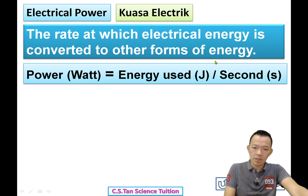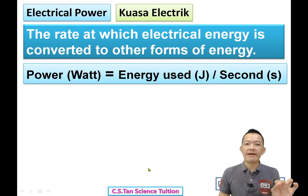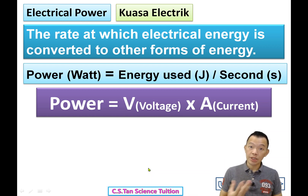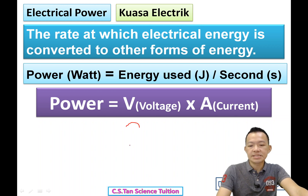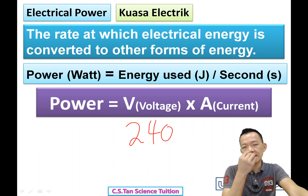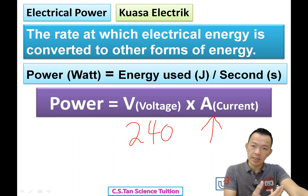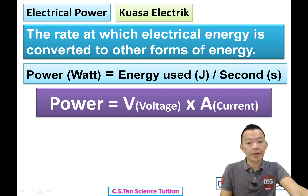Another formula — copy on the notes. Power is actually affected by voltage and current. In Malaysia, the voltage is fixed at 240V. The higher the current drawn by the appliance, the higher the power. Power equals voltage times current: P = V × I.